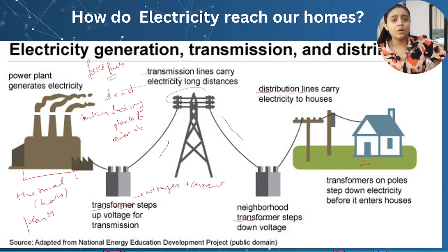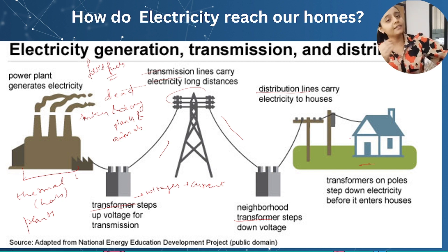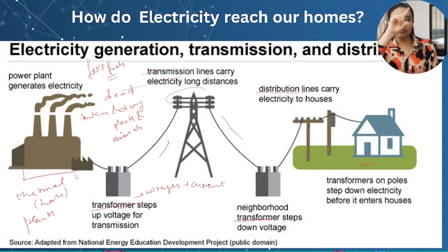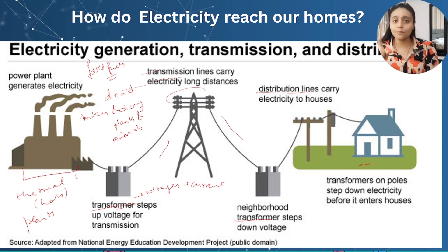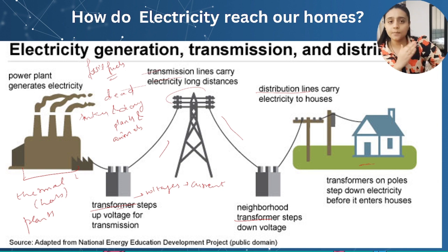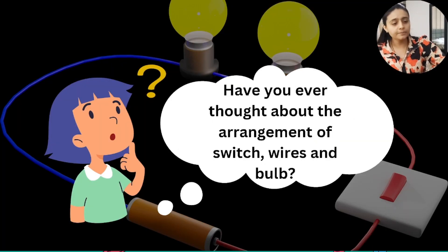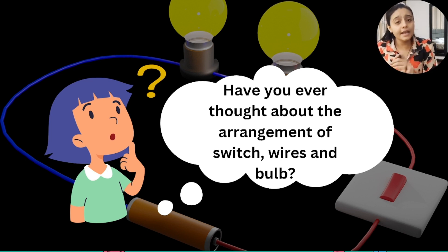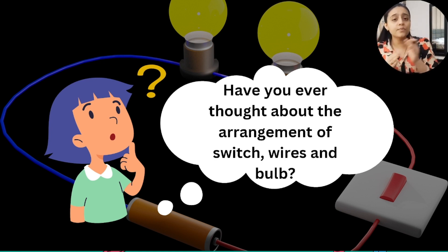Many steps are followed so that electricity can come to your homes. In this way the electricity reaches your homes. This electricity or current is connected to the wires behind the switchboard we talked about earlier — there's a collection of wires which carry all this electricity coming from the thermal plants. Now have you ever thought about the arrangement of the switch, wires, and bulb — how these are connected? We know there is a switchboard with switches, but how are these wires connected with your bulb and switches?